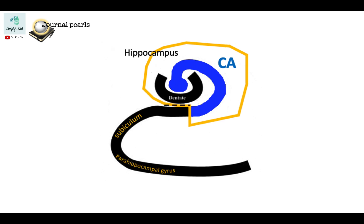The end point of infolding is that the external surface of the dentate gyrus is now in contact with the subiculum, hence obliterating the hippocampal sulcus.